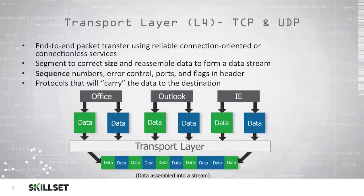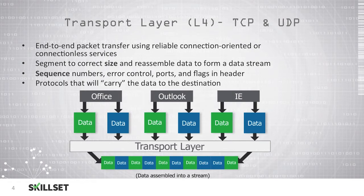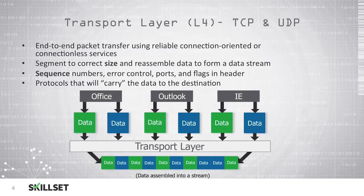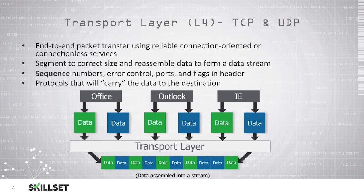At this layer we see sequence numbers being used to identify the order that packets are transmitted and should be received in, error control, port numbers, and flags in the headers. TCP and UDP are the protocols that will actually carry the data to the destination. We have things like office documents, Outlook emails, and Internet Explorer web browser data that is being transmitted from the application layer and moved down to the transport layer to make sure that it can be delivered correctly to its intended destination.